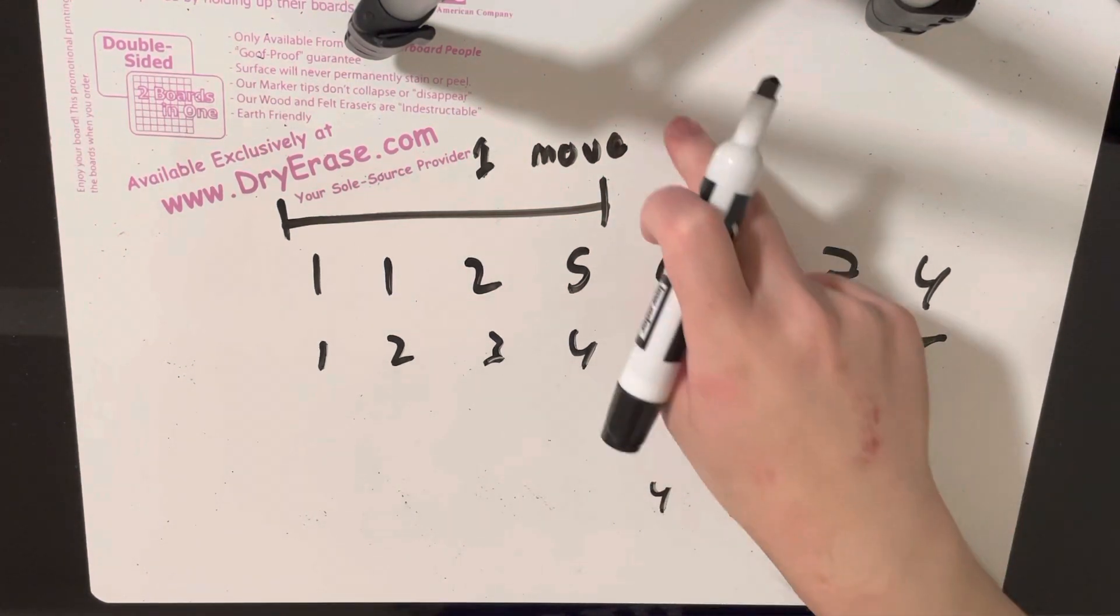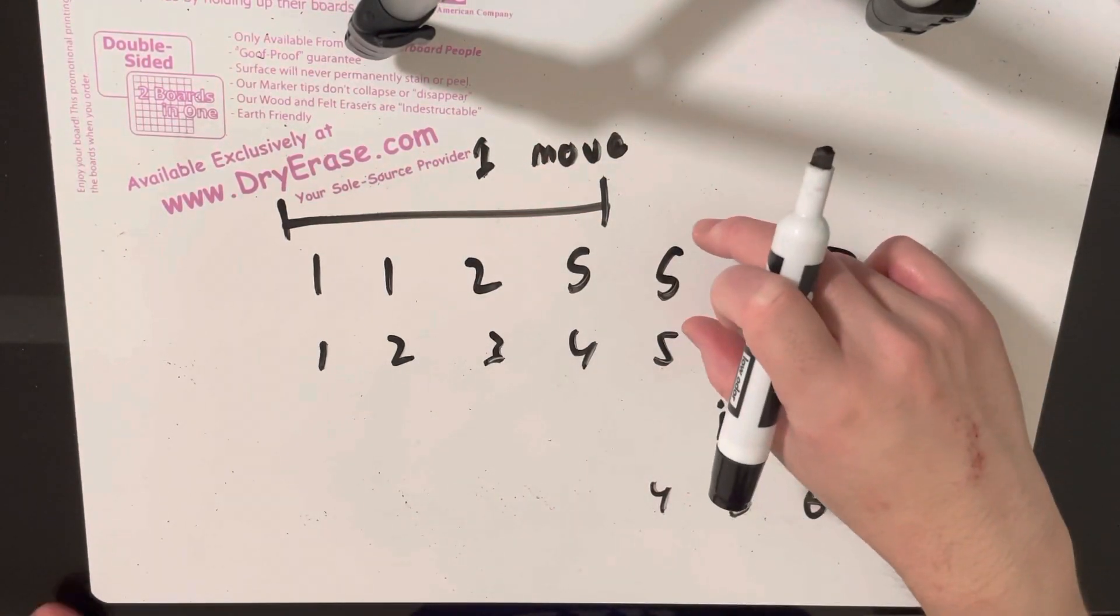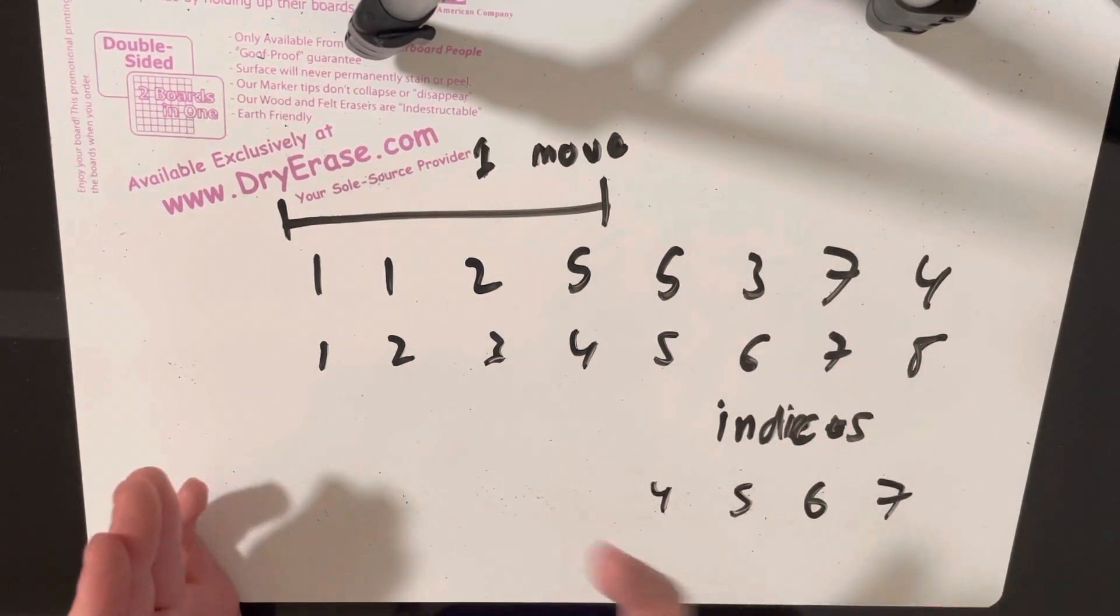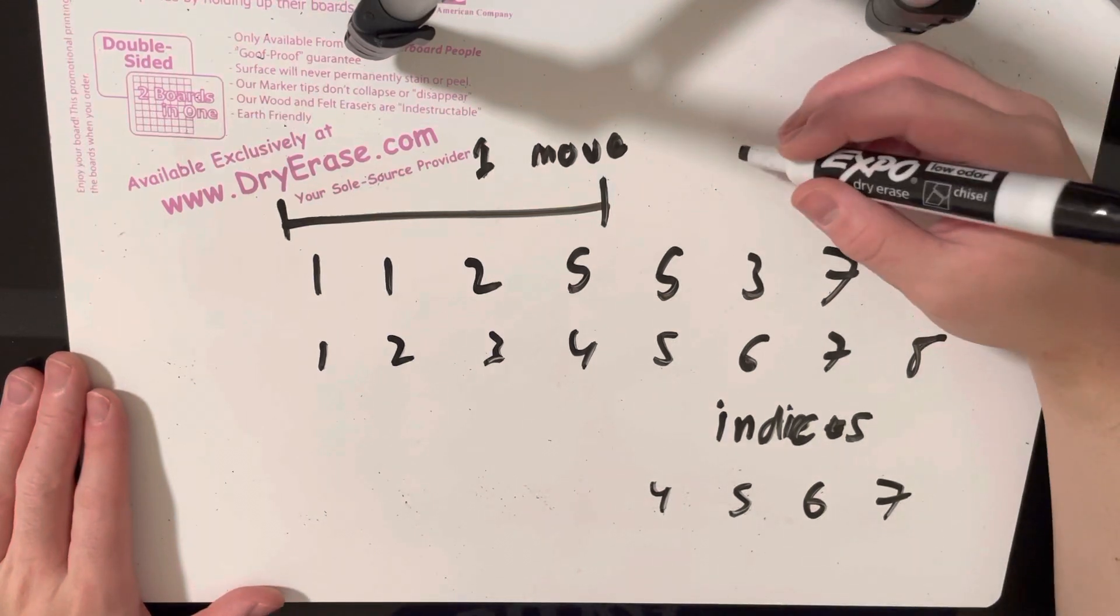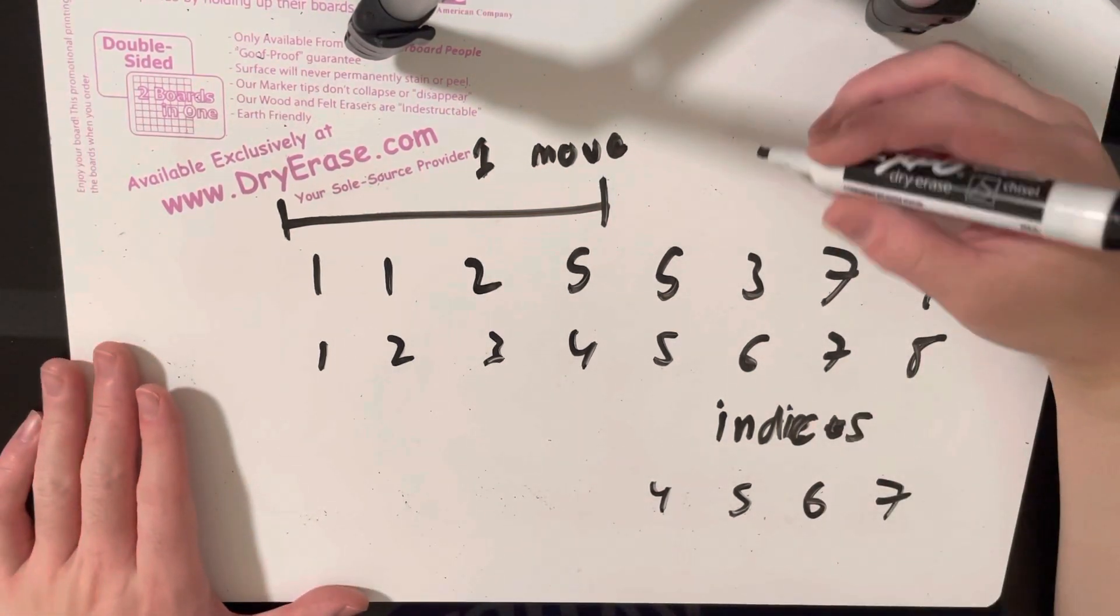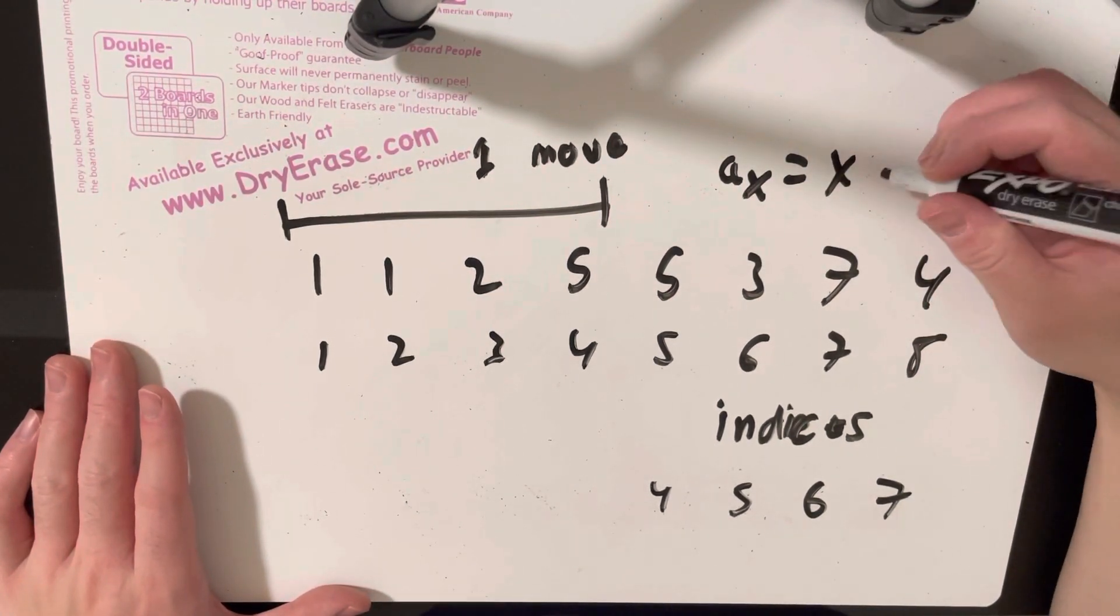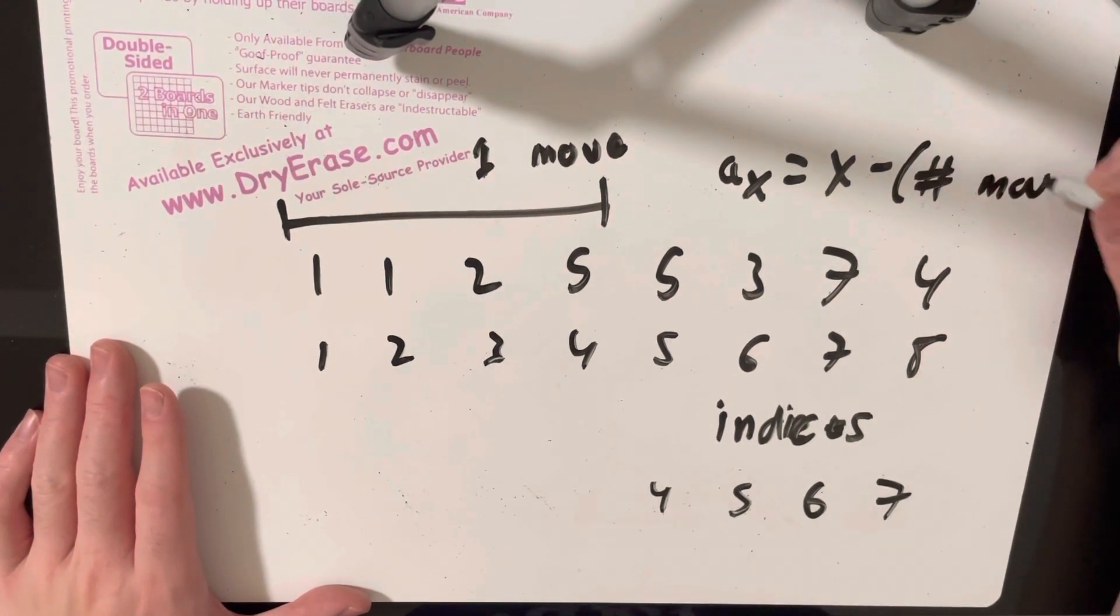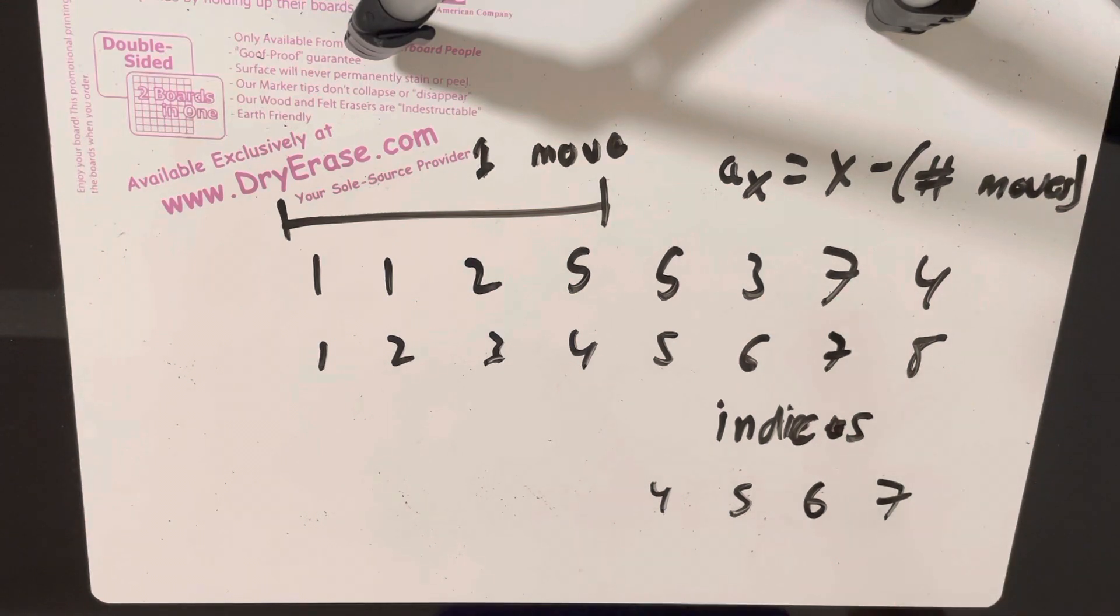So basically, if we know how many moves that we made in this prefix that we're currently in, we can actually determine where this element is located after all the shifts that happen during the removals in our array. And so all we have to do is to check, for example, if we have one move, we just have to add one to the current DP state if a at x is equal to x minus how many moves we've made. So like number of moves. And this is essentially the key way to how you make these transitions in this n squared DP.